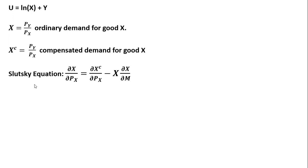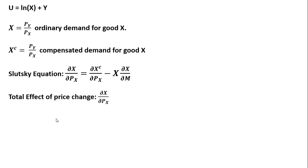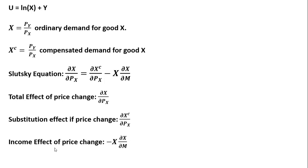Here is the Slutsky equation. The total effect of a change in the price of good x on units of good x is given by the substitution effect minus the income effect. The total effect is the partial derivative of ordinary demand with respect to the price of good x. The substitution effect is the partial derivative of the compensated demand function with respect to the price of good x. And the income effect is minus x — the ordinary demand — multiplied by the partial derivative of ordinary demand with respect to m, or income.